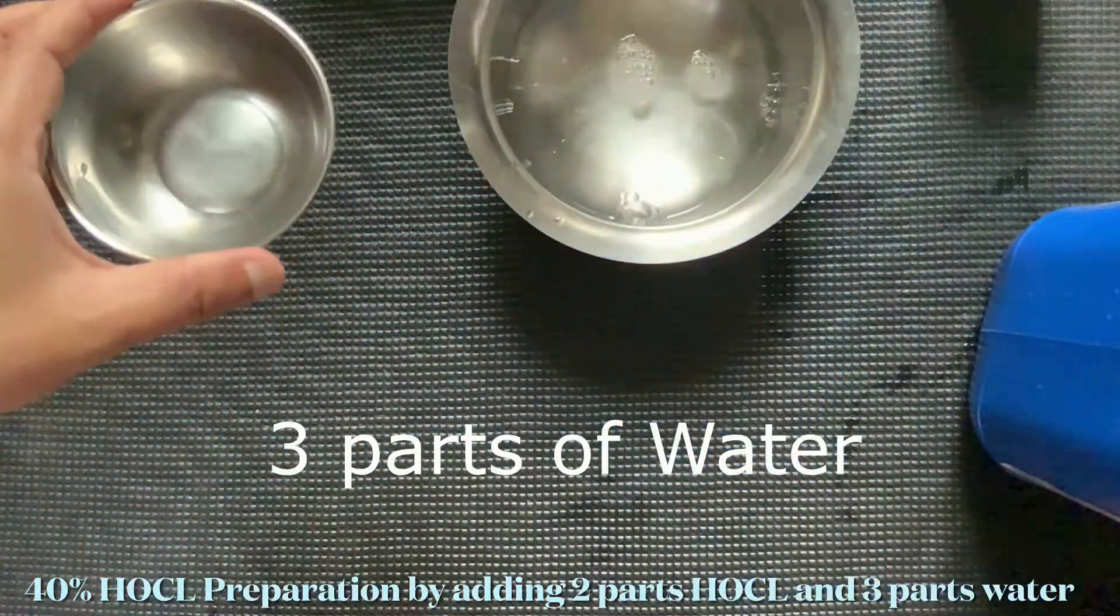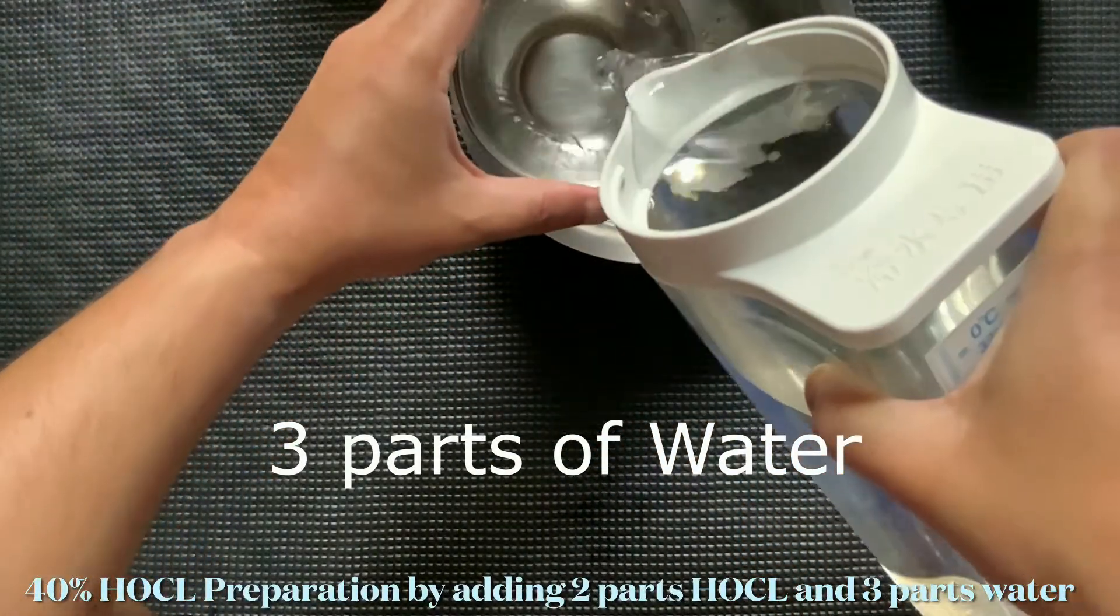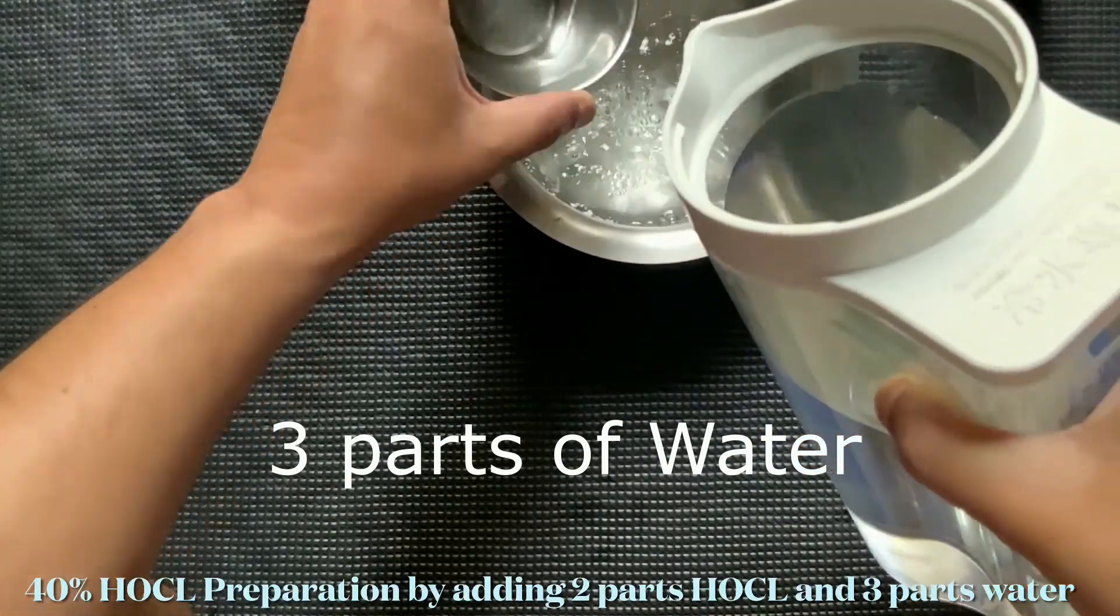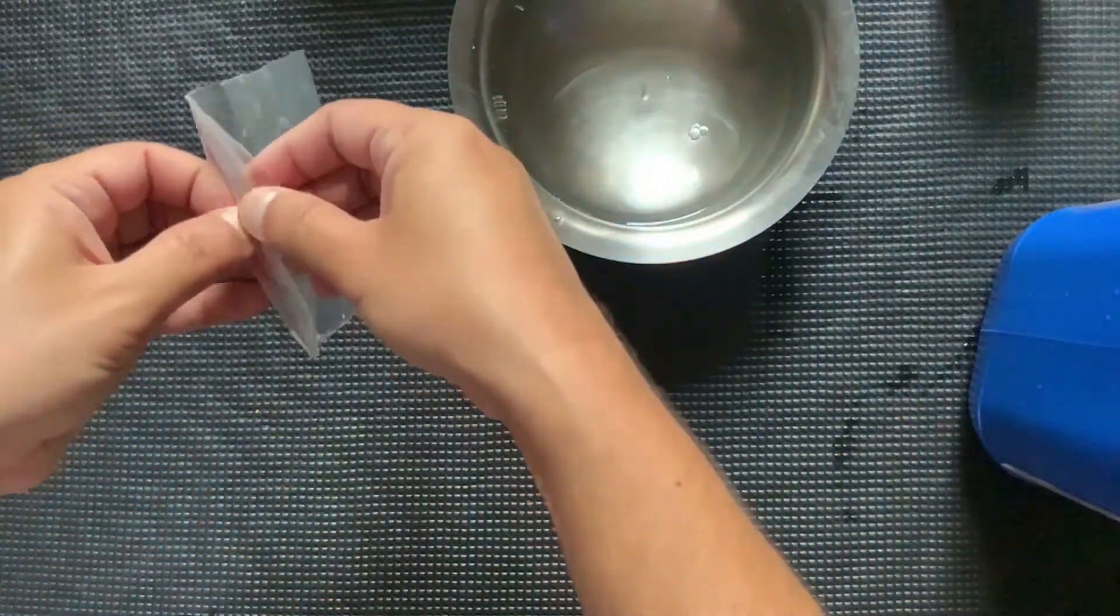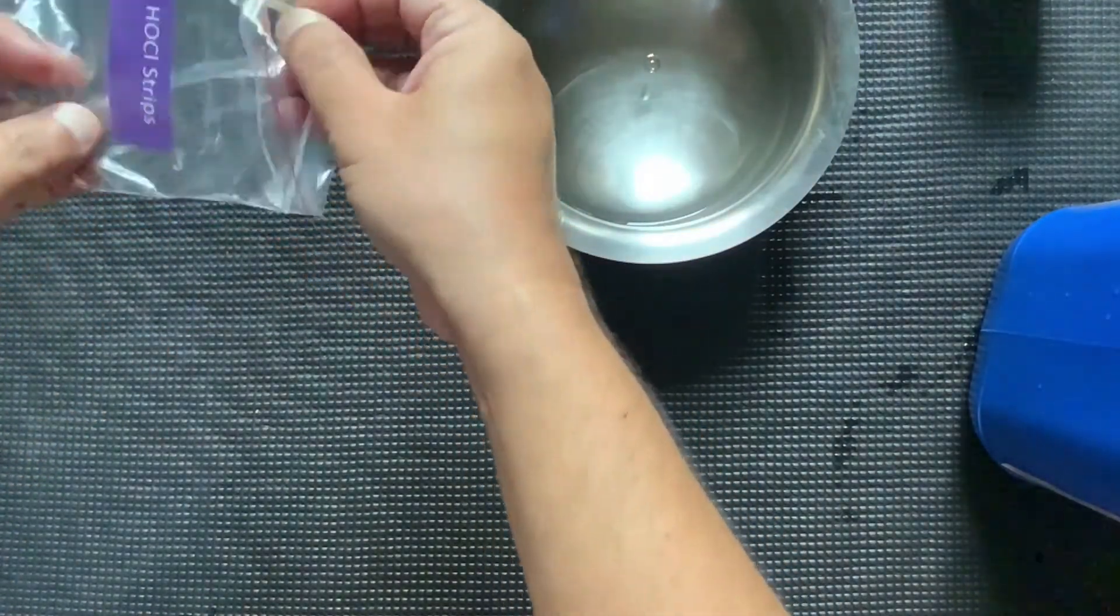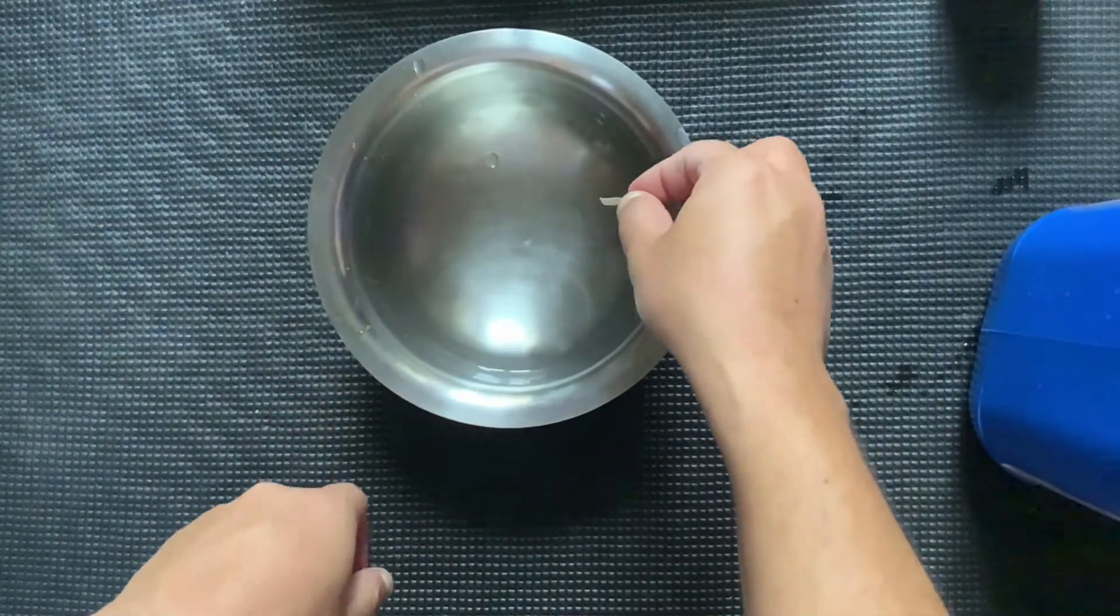Add 3 parts of clean water in the same utensil. Take out a paper strip from the HOCL kit and dip it into the 40% solution just made.